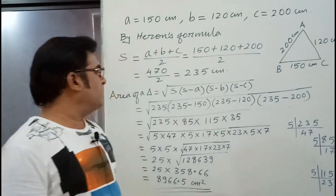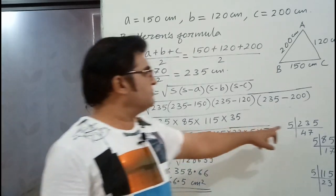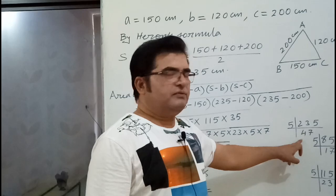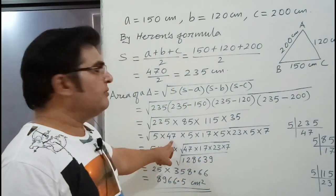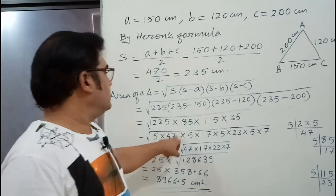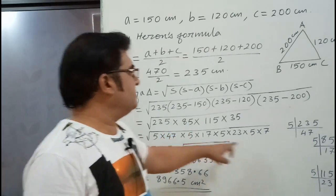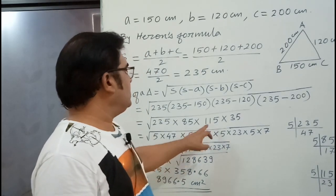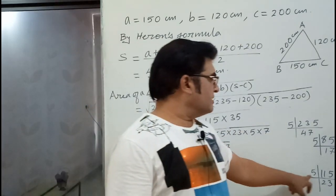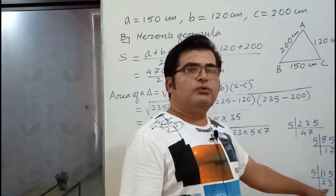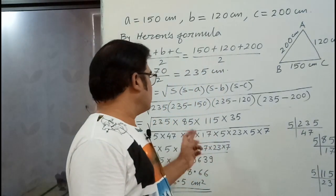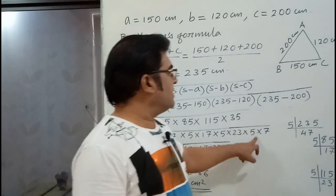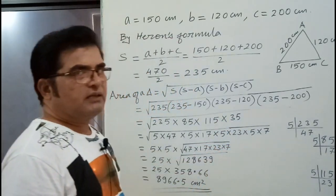Then we have to factorize them. 235 factors will be 5, 47. I have calculated rough, 5, 47. We have written 5 into 47. Then 85 is 5, 17. That you know orally, 5 into 17. 115 factors will be 5 into 23. So instead of 115, we will write 5 into 23. Then 35 is 5, 7. These are the factors.